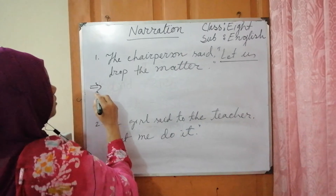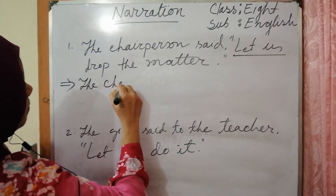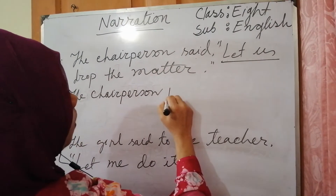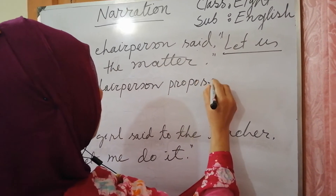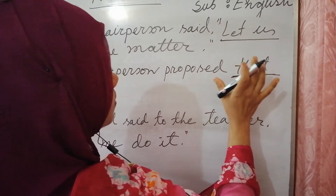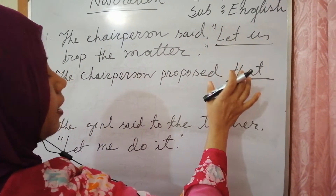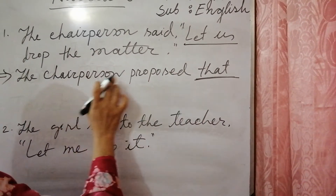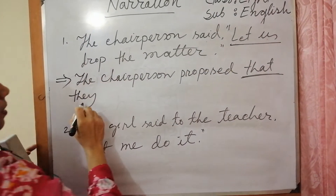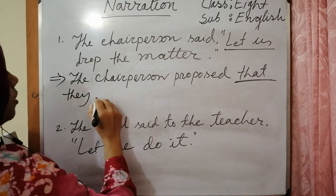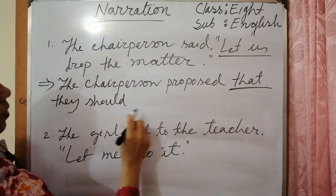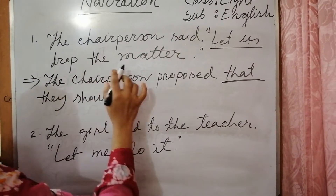See the change: 'The chairperson proposed that...' — note we don't use 'to,' we are using 'that' as a connector. 'Let us' changes to 'they,' so 'let' is replaced by 'should.' The indirect speech becomes: 'The chairperson proposed that they should drop the matter.'